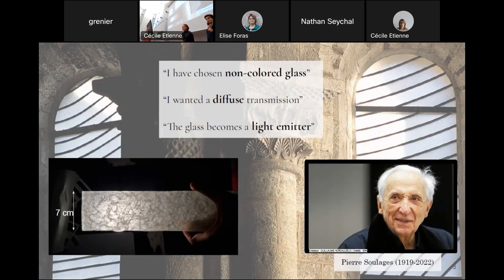First, the glass must be color neutral. Then it must spread the light in all directions, we call it a diffuser. And finally, it must transmit as much light as possible into the abbey.